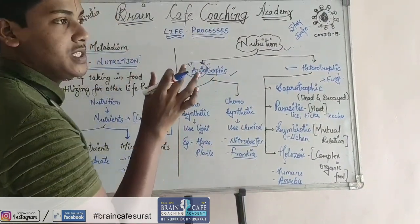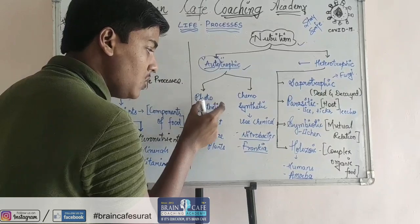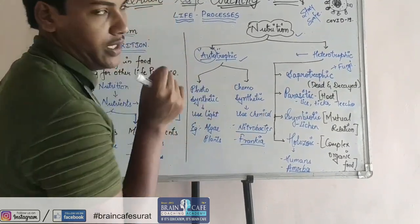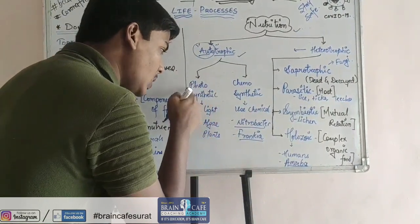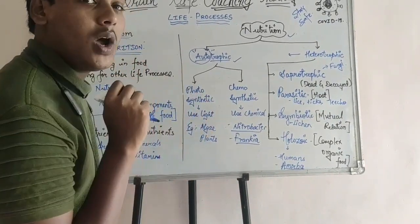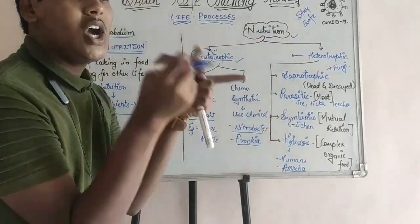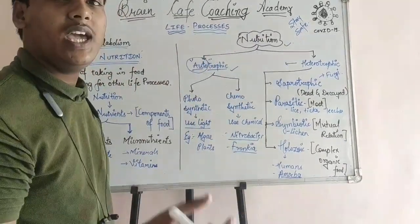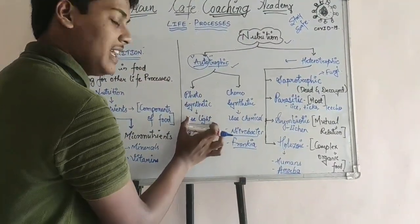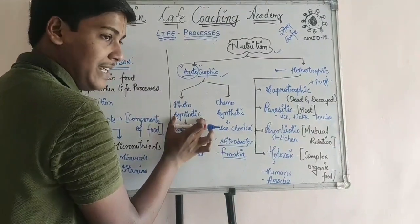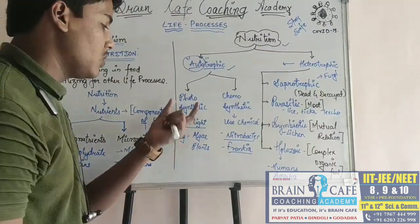Autotrophic nutrition is carried out in two directions: first, photosynthetic, and second, chemosynthetic. Photosynthetic means photo — light. Organisms which use light to prepare their own food are termed photosynthetic autotrophs. For example, plants are photosynthetic.